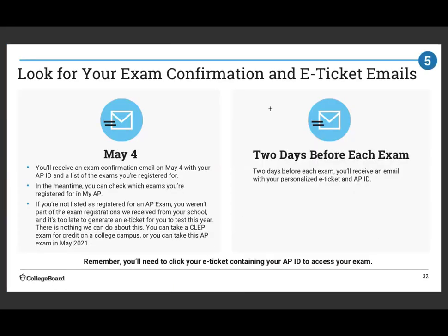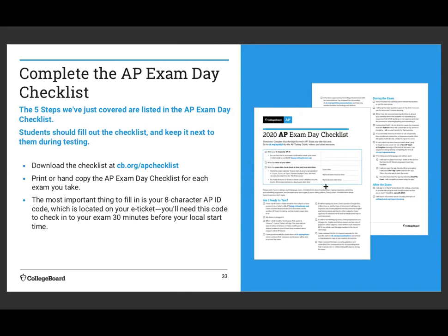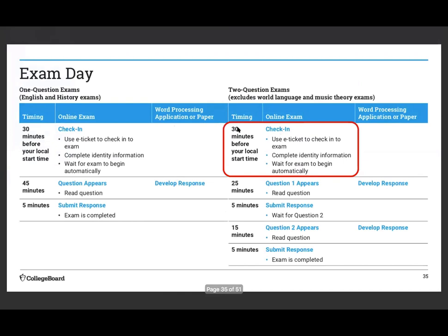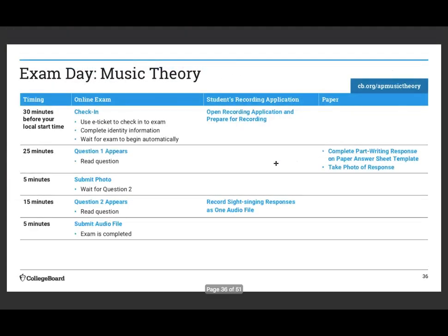You should be getting your confirmation email by May 4th, and your e-ticket two days before the exam, so you need to be checking your email. There's a checklist of things to do before the AP exam that I'll show you how to access. On the day of the exam, 30 minutes before start time, check in using your e-ticket, complete all your identity info, and wait for it to log in. While you're waiting, review your notes and get in a good mindset.